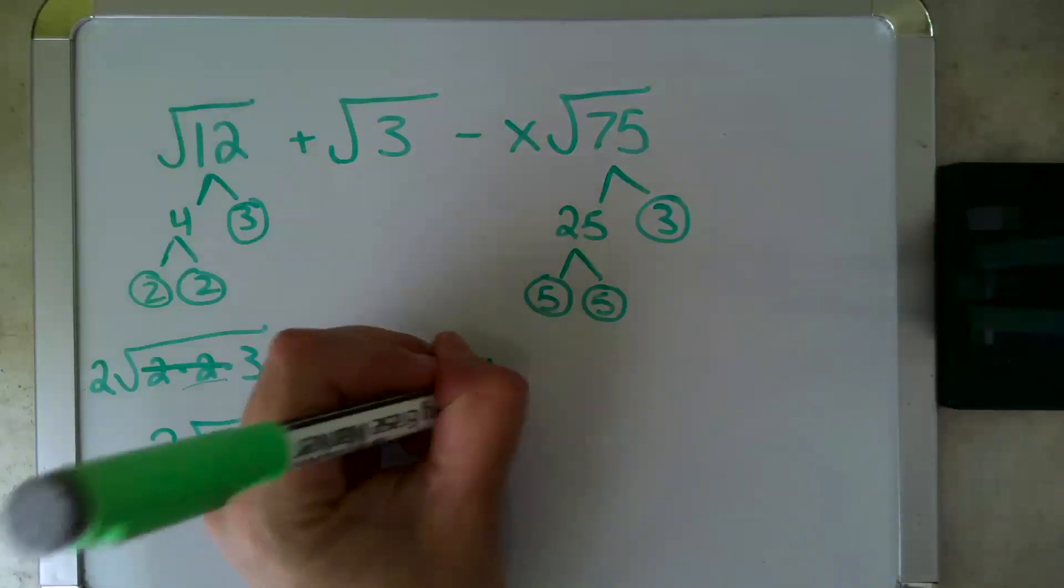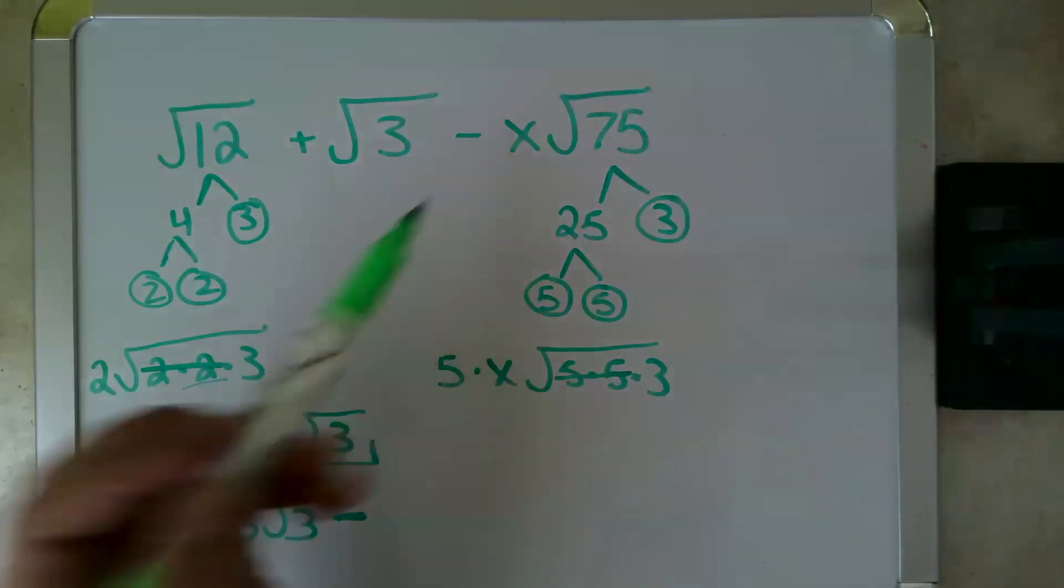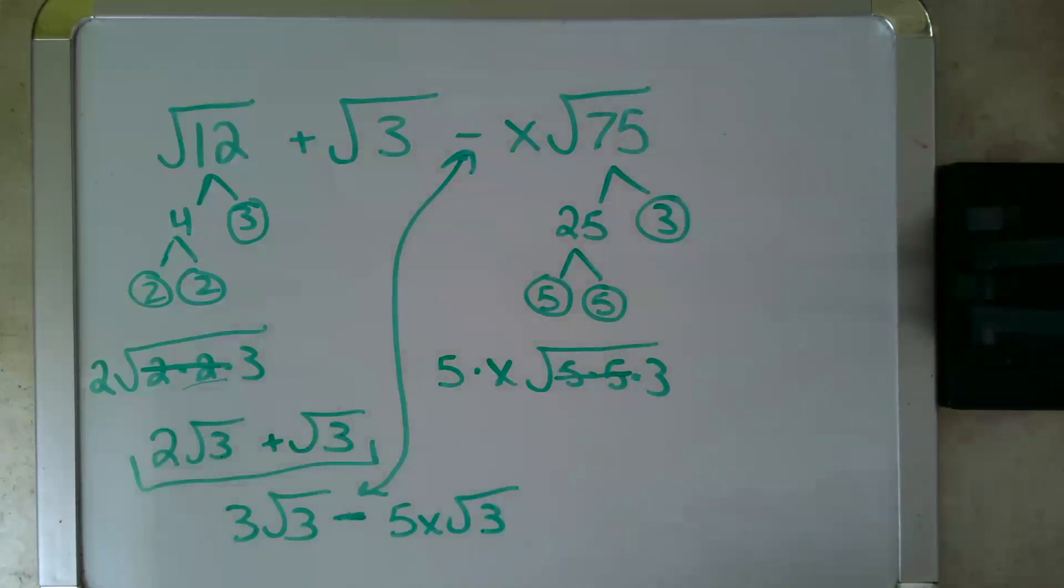So root 75 gets rewritten as root 5 times 5 times 3. It's a square root, so 2 on the inside becomes one of that factor on the outside. And when you put it on the outside, if there's something else on the outside, those are being multiplied together. So this becomes minus, because that was a minus up there, 5x root 3.